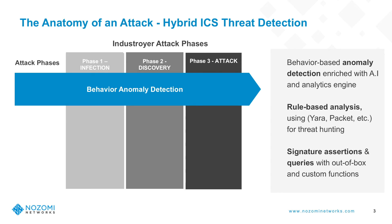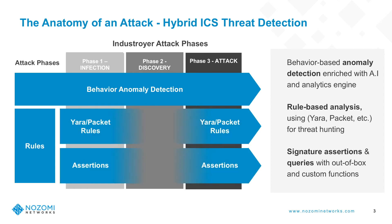In addition to behavior-based anomaly detection, we have what we call rules-based analysis. Rules-based analysis speaks to a solution's ability to support proactive threat hunting. Proactive threat hunting can be achieved in two ways: via external rules-based analysis or internal rules-based analysis.